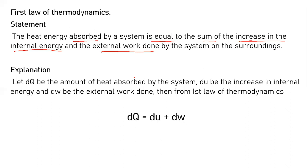This is the first law of thermodynamics: the amount of heat energy absorbed equals the increase in internal energy plus the external work done by the system on the surrounding. Let DQ be the amount of heat absorbed, DU be the increase in internal energy, and DW be the external work done. Then from the first law: DQ is equal to DU plus DW.